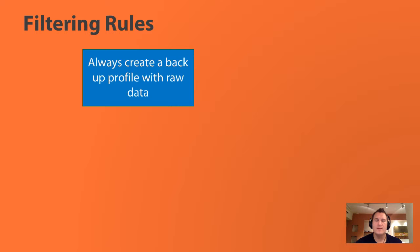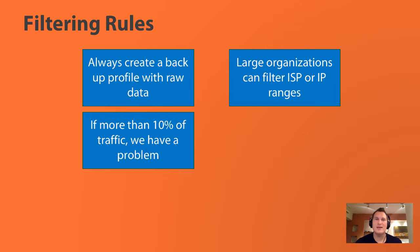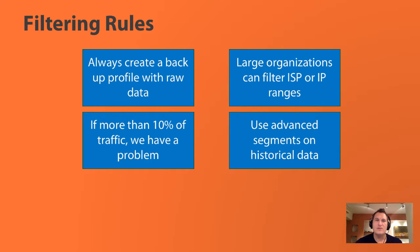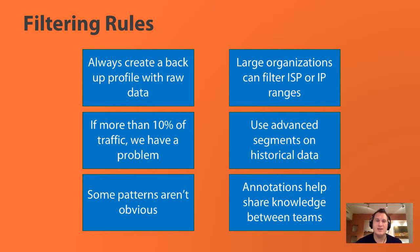Here are some rules when it comes to filtering: always create a backup profile with raw data. If you're a large organization, you can filter out your ISP or a range of IP addresses. If more than 10% of your traffic is showing up as your own internal traffic, that's going to create a big problem — it will mess up the statistics Google Analytics shows you about who's visiting your website. Use advanced segments if you want to go back and clean up some of your historical data. Some patterns are not always very obvious, and you can use annotations in your account to share knowledge between your teams.